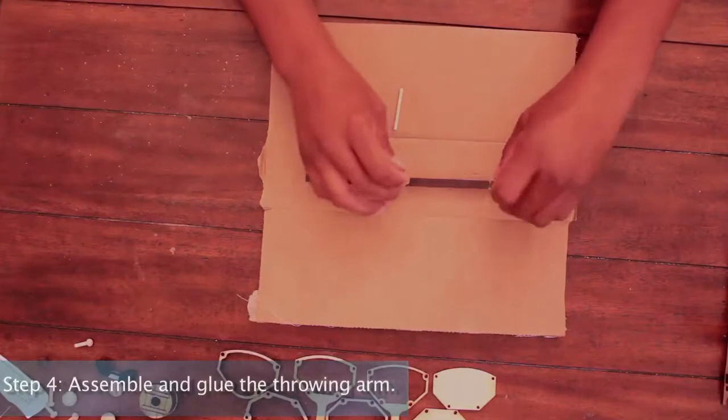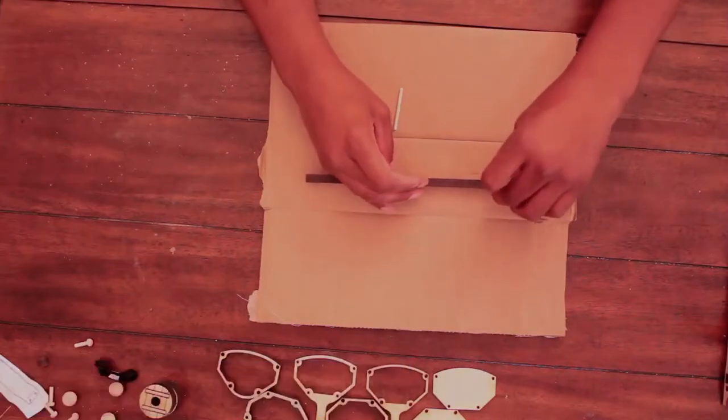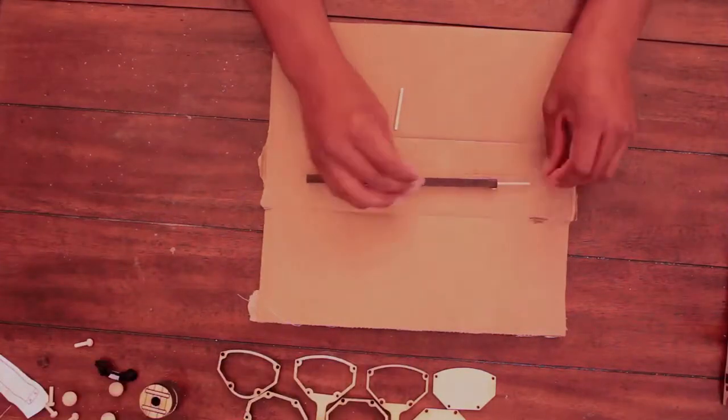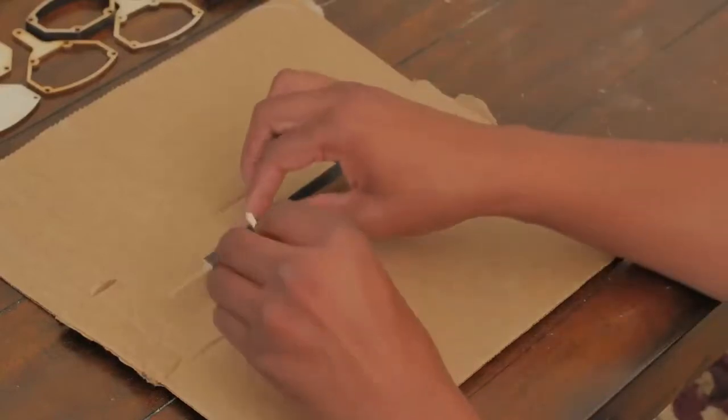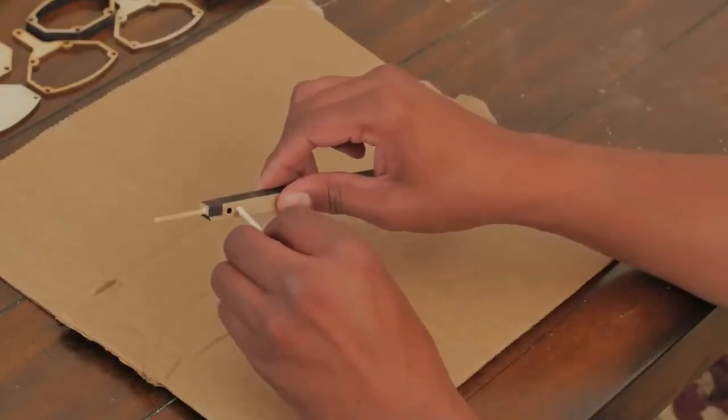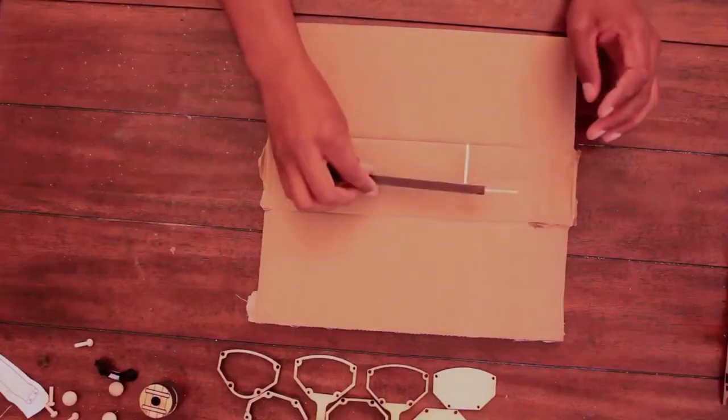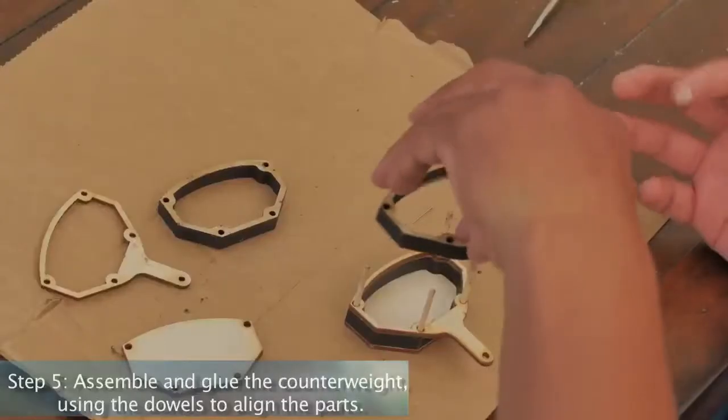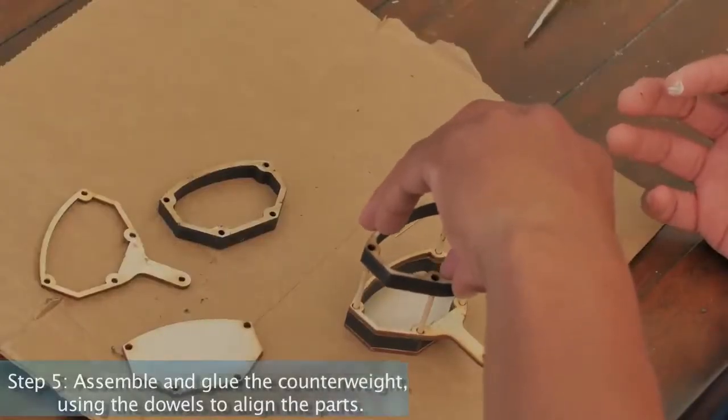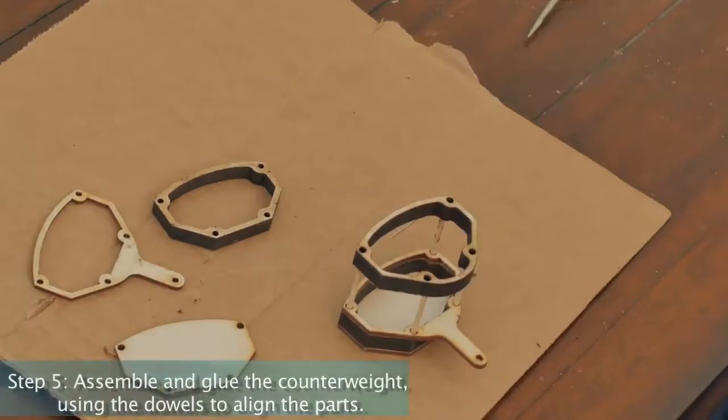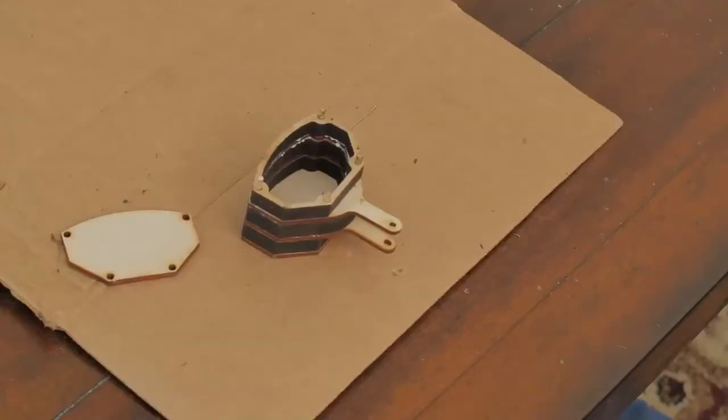Step 4: Assemble and glue the throwing arm. Step 5: Assemble and glue the counterweight, using the dowels to align the parts. Do not glue the lid in place yet.